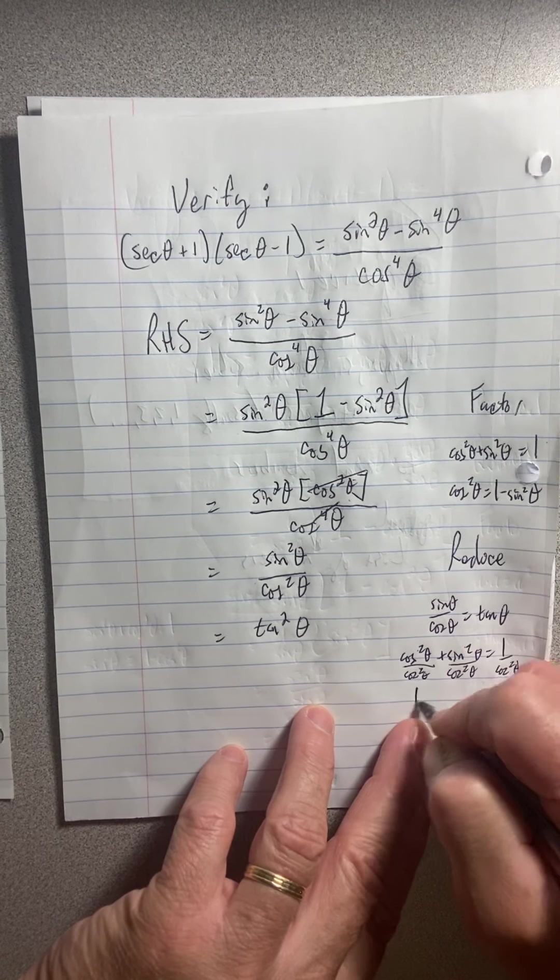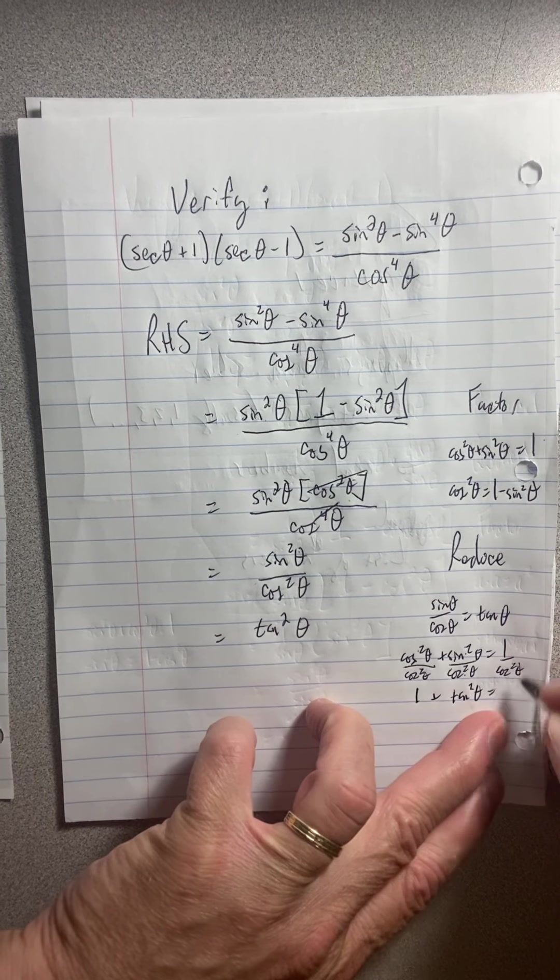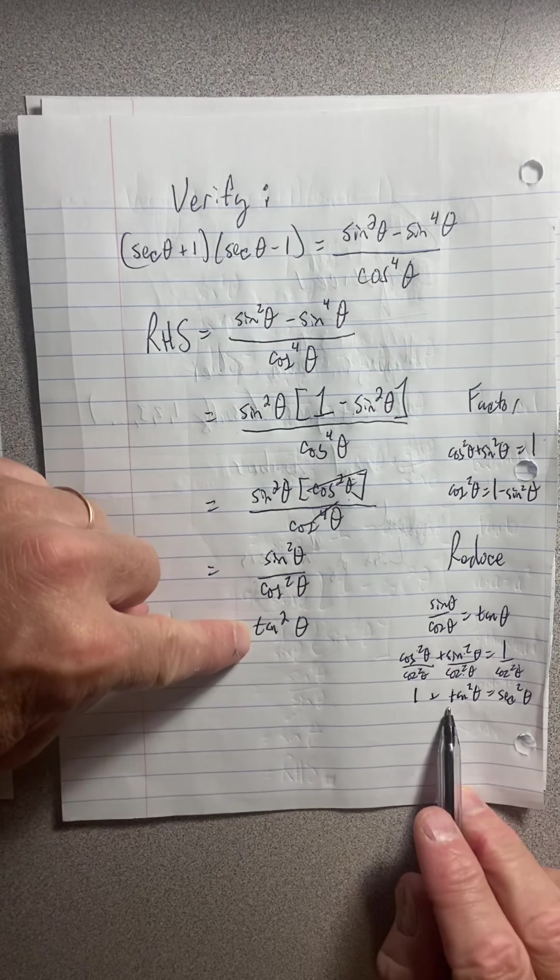So cos squared divided by cos squared is one. Sin squared over cos squared is tangent squared theta. And then one over cos squared is secant squared theta. Now I've got tangent squared theta.